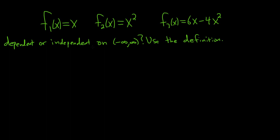In this problem we have three functions: x, x squared, and 6x minus 4x squared. And we're being asked if they're linearly dependent or independent on the set of real numbers, and it says use the definition.